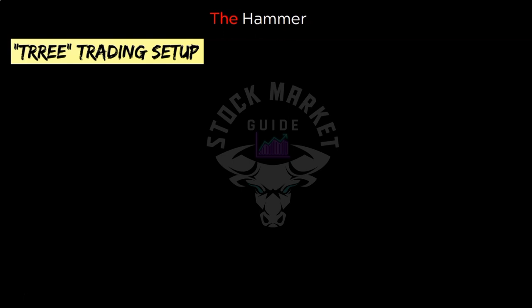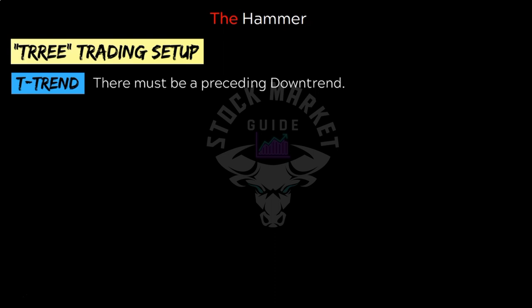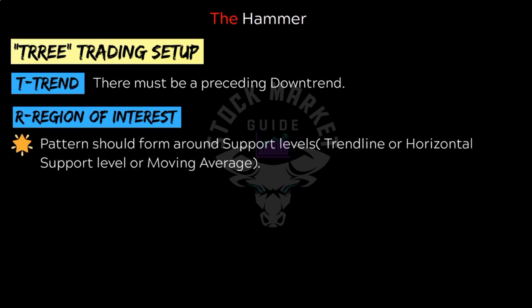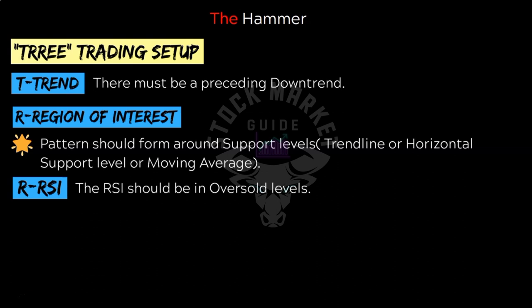Now let's understand the trading setup of the hammer pattern. The setup is almost the same as that of the dragonfly doji. The first step is T for trend — the trend must be down in case of hammer. Then R for region of interest — since this is a bullish reversal pattern, it should ideally form around support levels. This can be a trend line, horizontal support level, or even a moving average. For RSI, it should be in oversold levels.